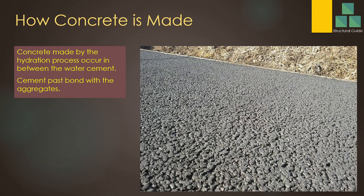How concrete is made: Concrete is made by the hydration process that occurs between cement and water. The cement paste is bonded with the aggregates — that is what we call concrete.